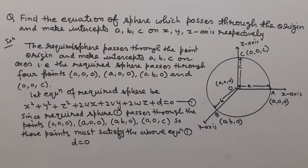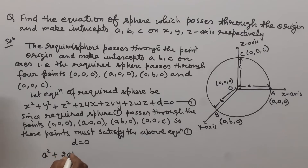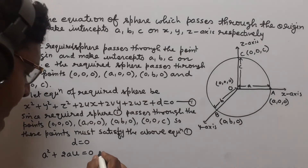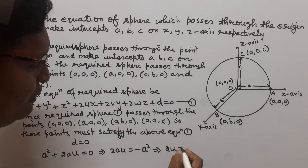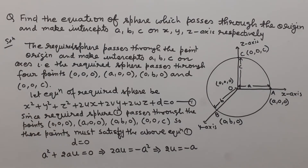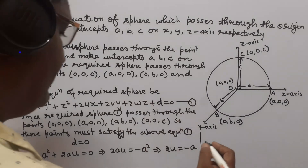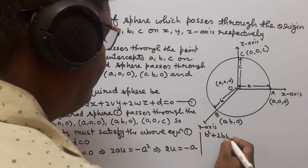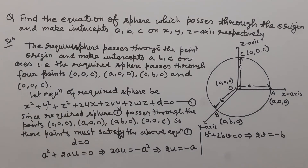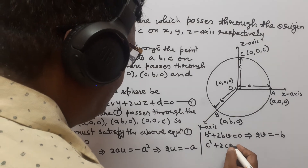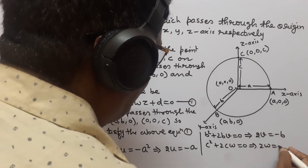Next, we put point (a, 0, 0) in equation 1 and get a² + 2aU = 0, so 2U = −a. Similarly, we put point (0, b, 0) in equation 1 and get b² + 2bV = 0, so 2V = −b. We put point (0, 0, c) in equation 1 and get c² + 2cW = 0, so 2W = −c.